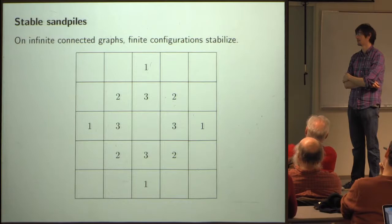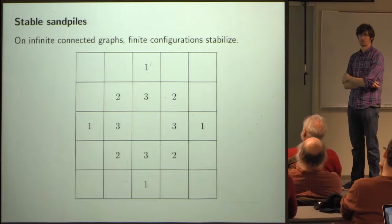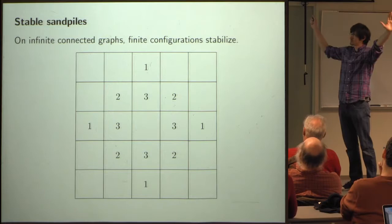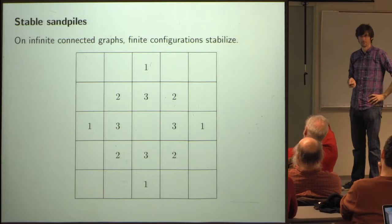An audience member asks: why didn't that one vertex topple to its neighbors? The speaker clarifies: this is an infinite graph — the square lattice — but only a five-by-five piece is drawn. The answer is that you need four chips to topple on the square lattice, since each vertex must have at least as many particles as its four neighbors.